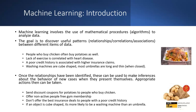Machine learning uses mathematical procedures and algorithms, often looking for relationships and correlations. For example: people who buy chicken often buy potatoes; lack of exercise is correlated with heart disease; a poor credit history correlates with higher insurance claims; washing machines are cube-shaped; most umbrellas are long and thin. These are examples of finding patterns in data. Once relationships are identified, they can be used to make inferences about new cases.